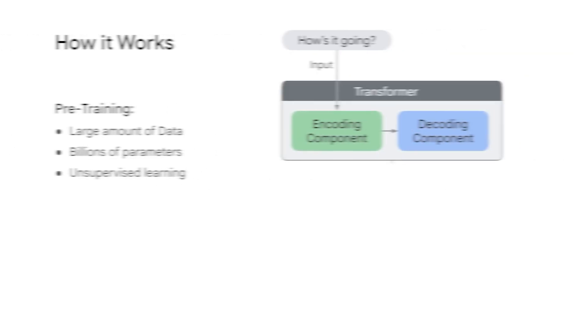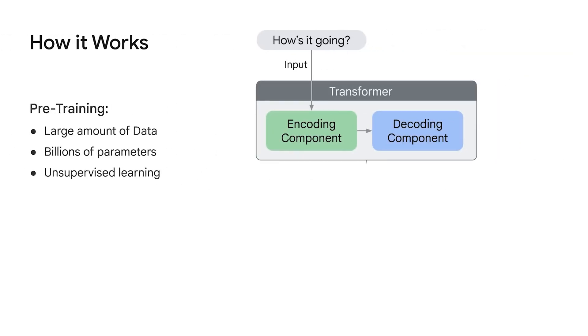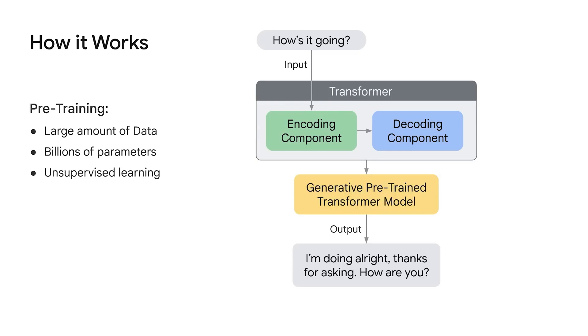On the other hand, VAEs or Variational Autoencoders work a bit differently. They encode input data into a compressed format and then decode it to generate new data. This process helps in creating variations of the original input, making it perfect for applications like image synthesis and data augmentation.